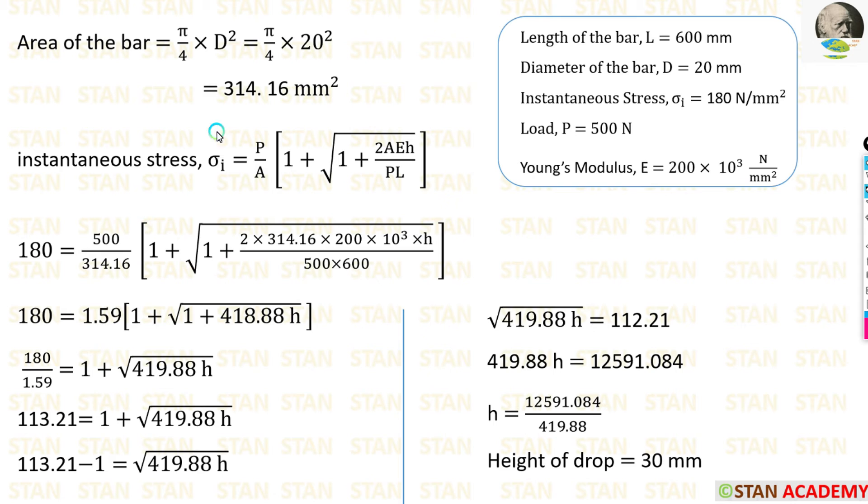Now we can apply all the values inside this formula. We can apply all the values except H. That is what we are going to find out, the height of the drop. The value of the load P is given in the question, 500 Newton. The instantaneous stress is also given, 180. The area we have just calculated. The Young's modulus is also given in the question. The length of the bar is given. So everything is available. We can apply inside the formula. Then we can make the simplification.